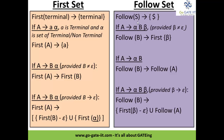For the follow set: follow of S, where S is the starting symbol, is always dollar. If A gives alpha-B-beta, and beta does not give epsilon, then follow of B can be generated from first of beta. If A gives alpha-B, then follow of B equals follow of A. If A gives alpha-B-beta and beta gives epsilon, then follow of B equals first of beta minus epsilon, unioned with follow of A. These are the rules for calculating the first and follow sets.